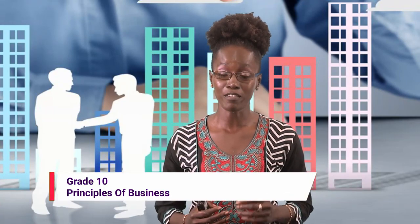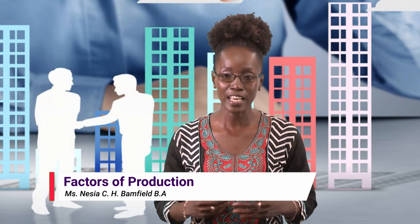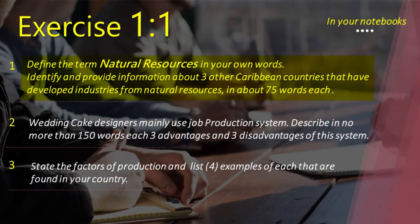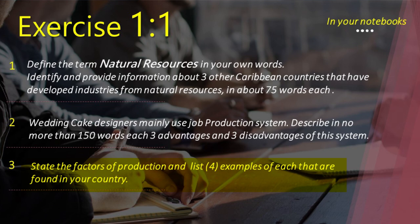We have come to the end of our lesson on factors of production. It is expected that at the end of this lesson, you will produce the following responses in your notebooks. Lesson exercises: Number one, define the term natural resources in your own words, and identify and provide information about three other Caribbean countries that have developed industries from natural resources in about 75 words each. Number two, wedding cake designers mainly use a job production system — describe in no more than 150 words each, three advantages and three disadvantages of this system. Number three, state the factors of production and list four examples of each that are found in your country.